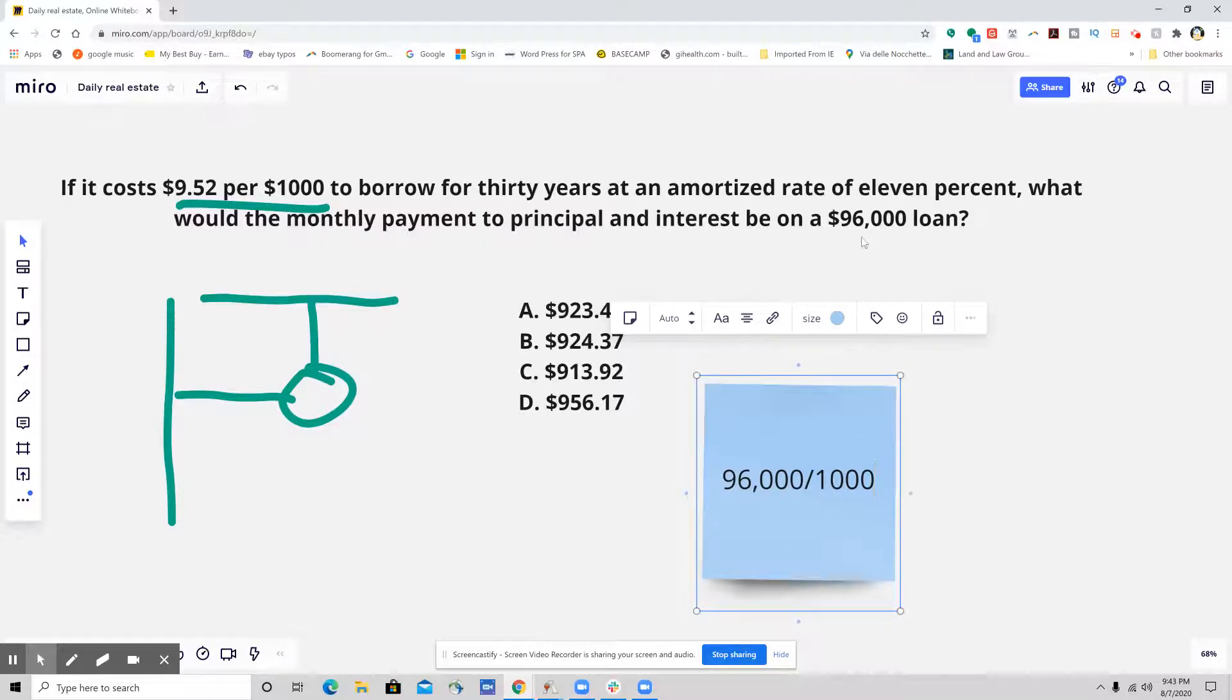So I have to figure out how many $1,000 go into $96,000. So that would give us 96. And then from there, all we have to do is multiply it by $9.52.